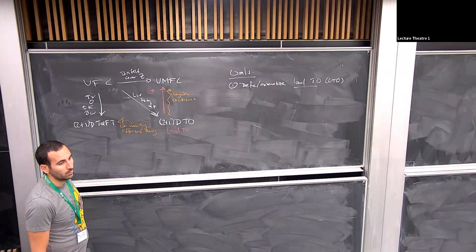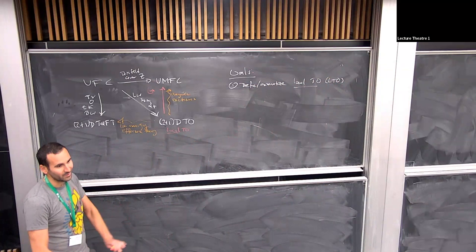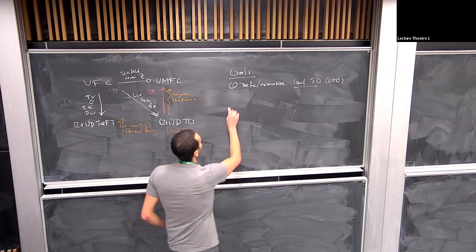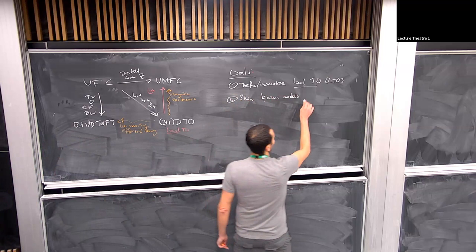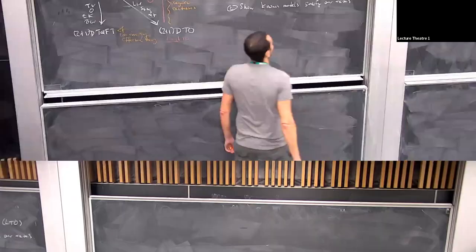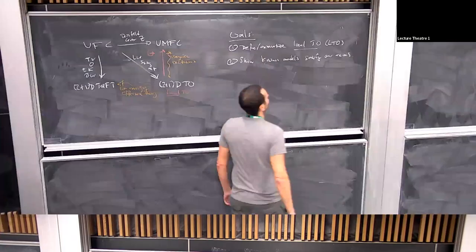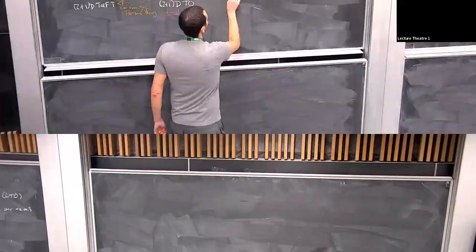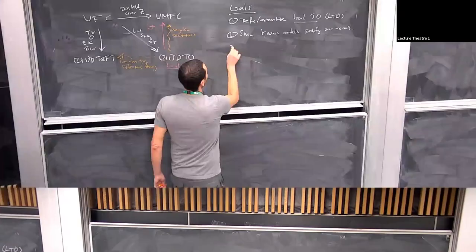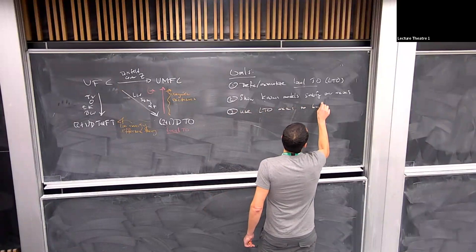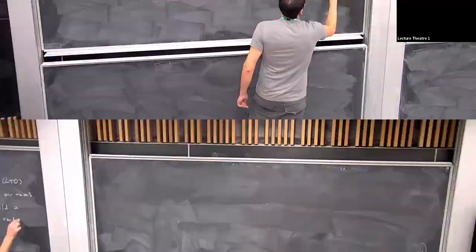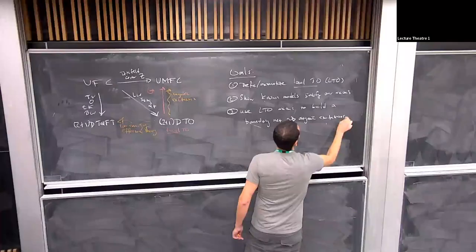The question is what is the phenomenology of 'local'? Two, we're going to show that the known models we love — the Toric code, Kitaev quantum double model, and the Levin-Wen string net model — satisfy these axioms. These axioms are developed with concrete examples in mind.